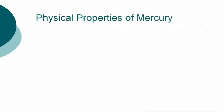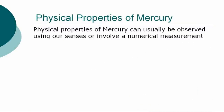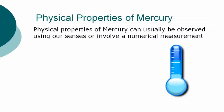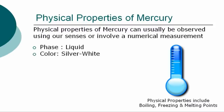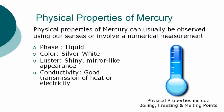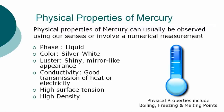The physical properties of mercury can usually be observed using our senses or involve a numerical measurement, such as determining its boiling, freezing, and melting points. The physical properties of mercury are: phase — liquid; color — silver-white; luster — shiny, mirror-like appearance; conductivity — good transmission of heat or electricity; high surface tension — when mercury is spilled, it breaks up into tiny beads, which often become lodged in cracks; and high density.